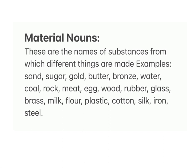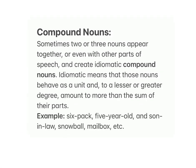Examples of material nouns: sand, sugar, gold, butter, bronze, water, coal, rock, meat, egg, wood, rubber, glass, brass, milk, flour, plastic, cotton, silk, iron, steel. Compound nouns: sometimes two or three nouns appear together, or even with other parts of speech, and create idiomatic compound nouns — meaning those nouns behave as a unit. Examples: six-pack, five-year-old, son-in-law, snowball, mailbox.